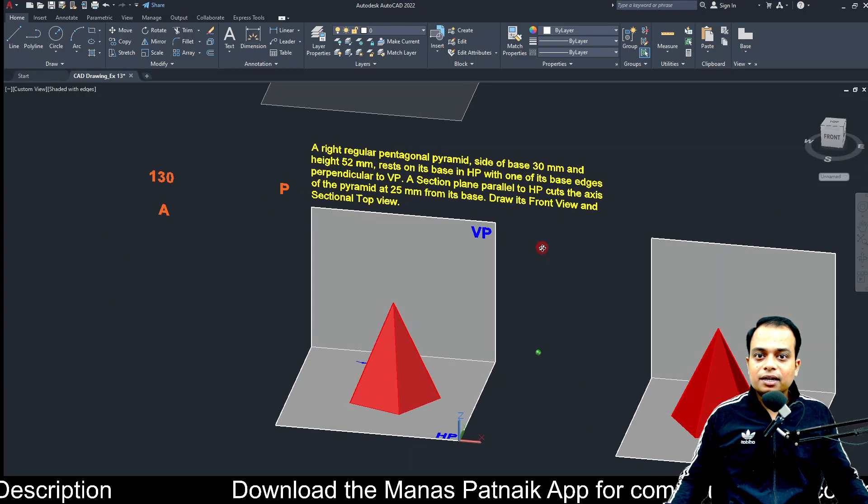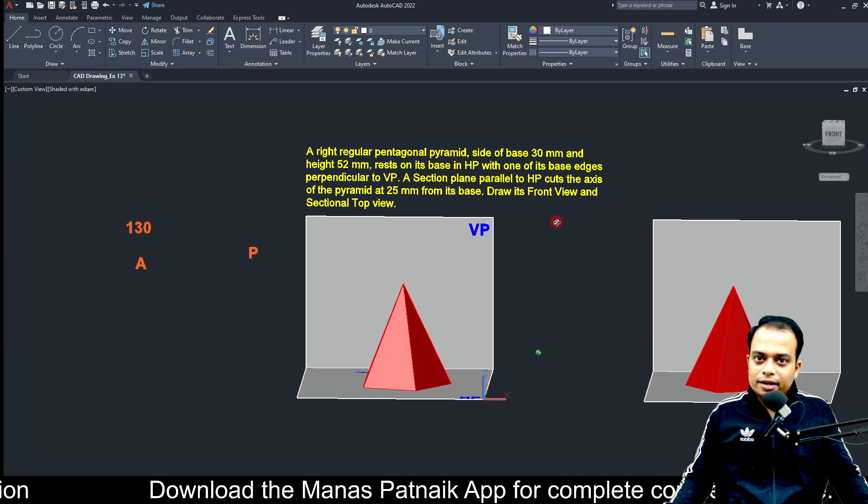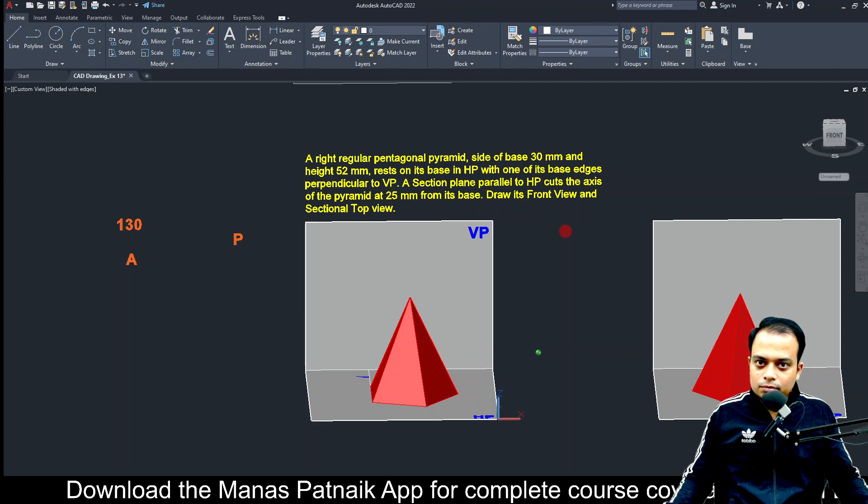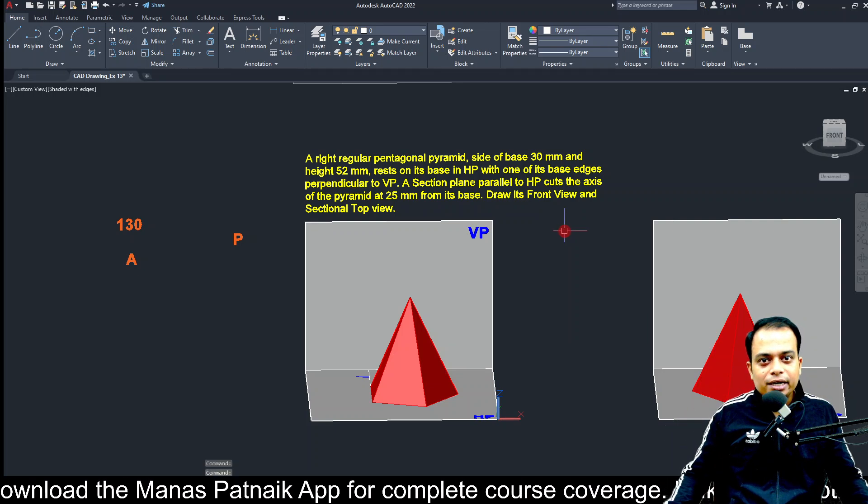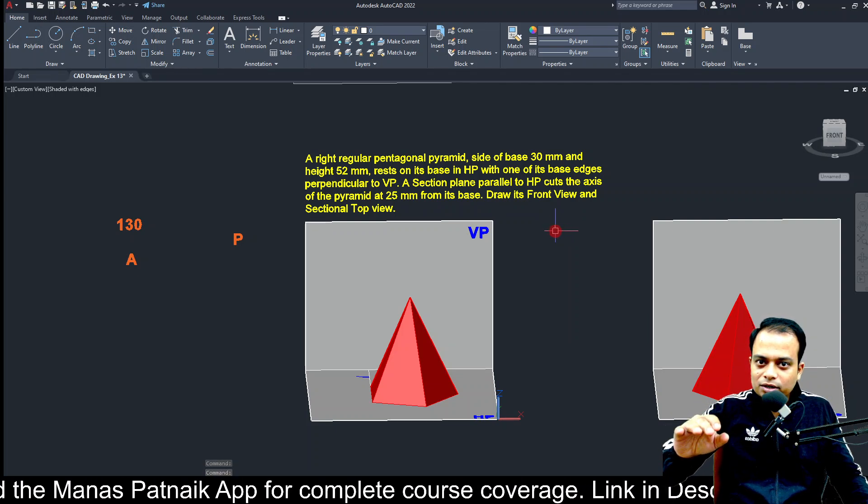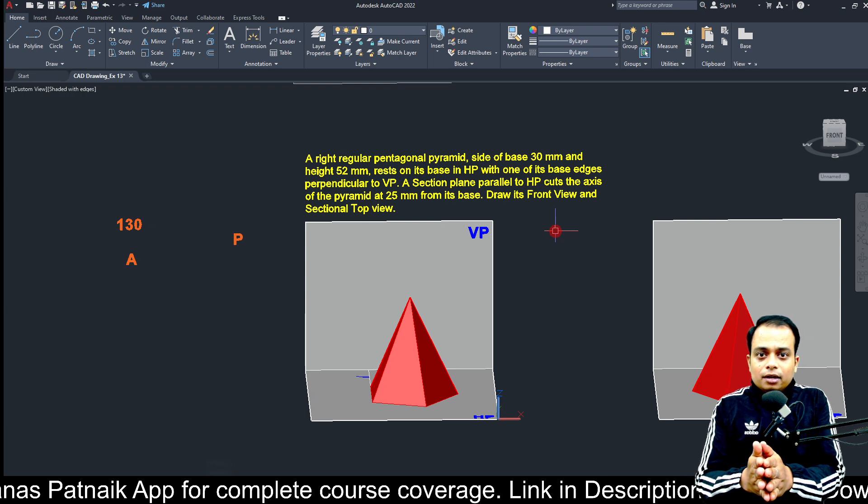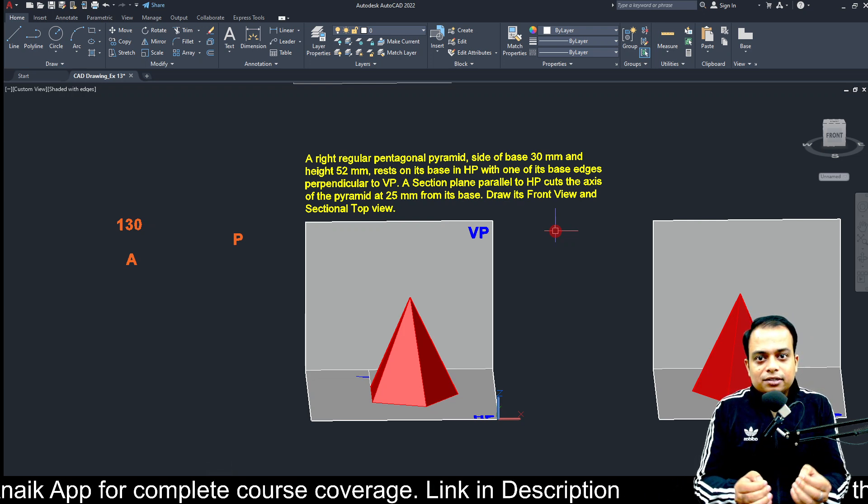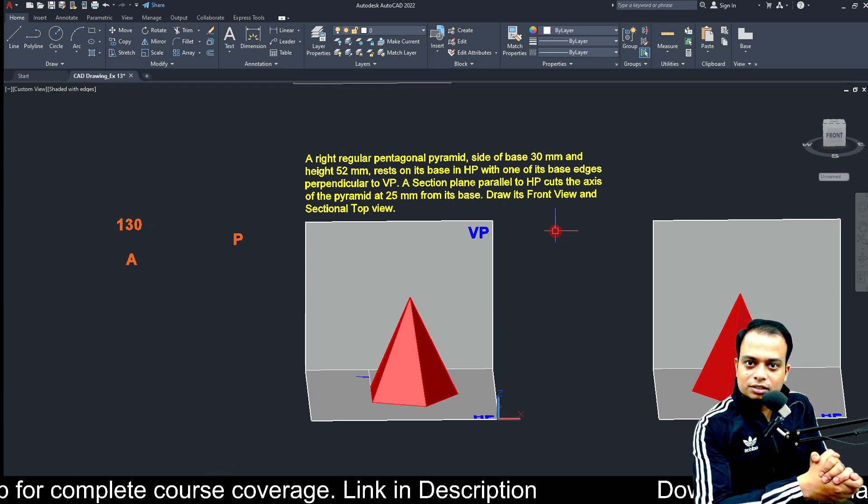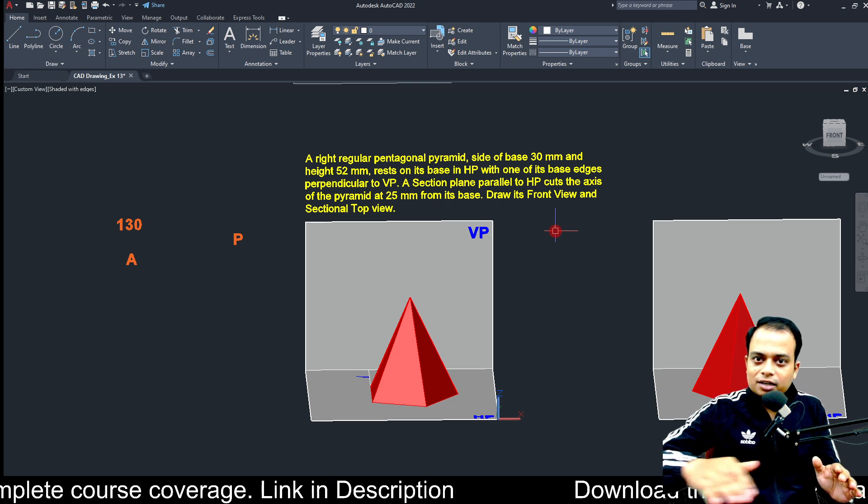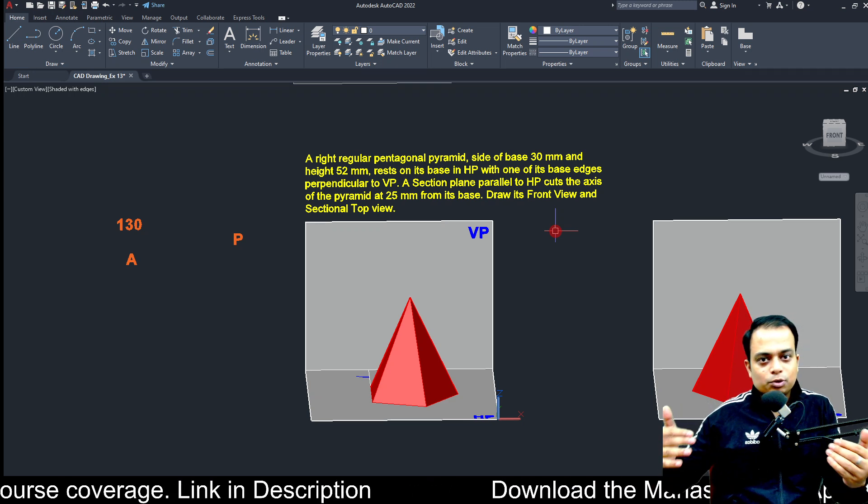Good evening friends, this is Manas Patnaik, your friend and tutor. In today's session, we are going to be cutting or sectioning a pentagonal pyramid which is resting with its base on HP. The chapter we are discussing is section of solids. Sectioning means cutting a solid and then drawing its projections - front view, top view, side view, and so on.